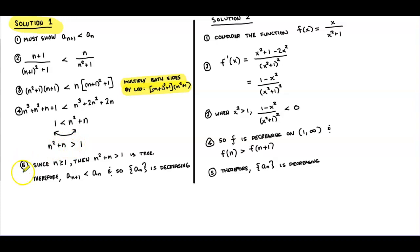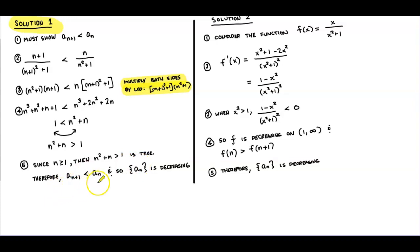In step five, since n ≥ 1, we can say that n² + n > 1 is true. Therefore a_{n+1} < a_n, and so the sequence a_n is decreasing.